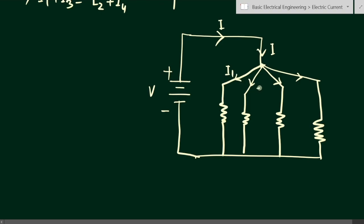The four branch currents are I1, I2, I3, and I4. Each current flows through its respective resistance and returns. You can see this current capital I entering the junction point and dividing into four parts I1, I2, I3, and I4. According to Kirchhoff's law, the total current entering the junction equals the total current leaving the junction.